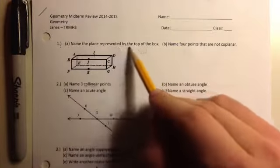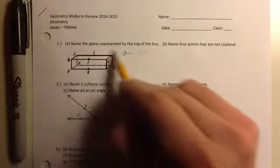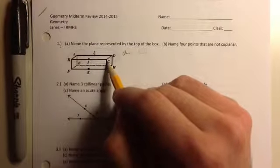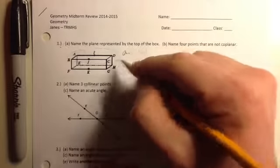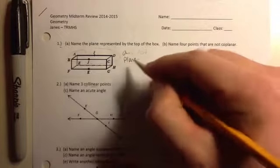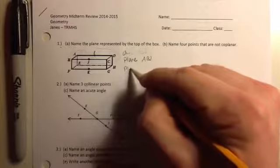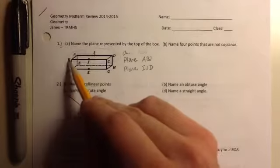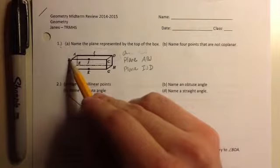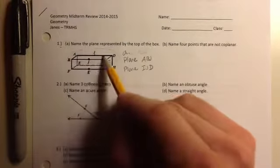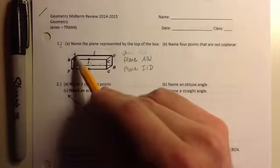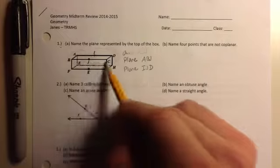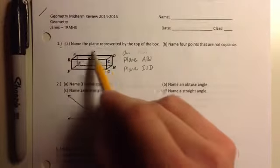A. Name the plane represented by the top of the box. The top of the box is right here, and it has the points A, B, I, J, D, and C on it. A plane is represented by only three points, so you can pick any three of those. So, for example, I could call the top of the box plane A, B, J. Or, I could call the top of the box, another option, plane I, J, D. Another thing you cannot do is use three points that are also collinear in the same line. So, something like B, J, C would not work because those could be on the top of the box, or they could be on the side of the box.